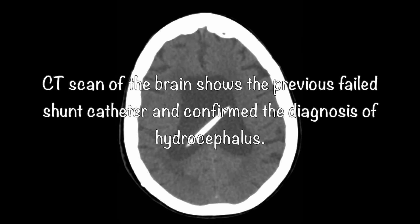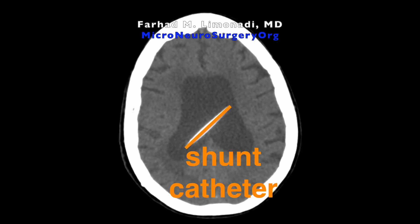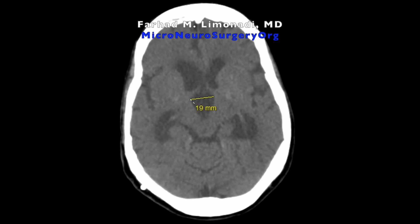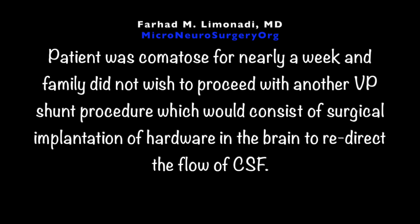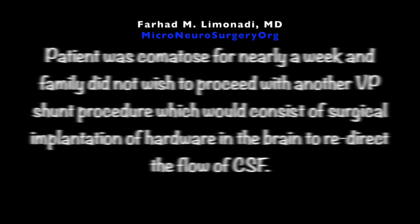CT scan of the brain shows the previous failed shunt catheter and confirmed the diagnosis of hydrocephalus. The patient was comatose for nearly a week and the family did not wish to proceed with another VP shunt procedure — surgical implantation of hardware in the brain to redirect CSF flow — or even ventriculostomy, which would be the most appropriate thing to do here.